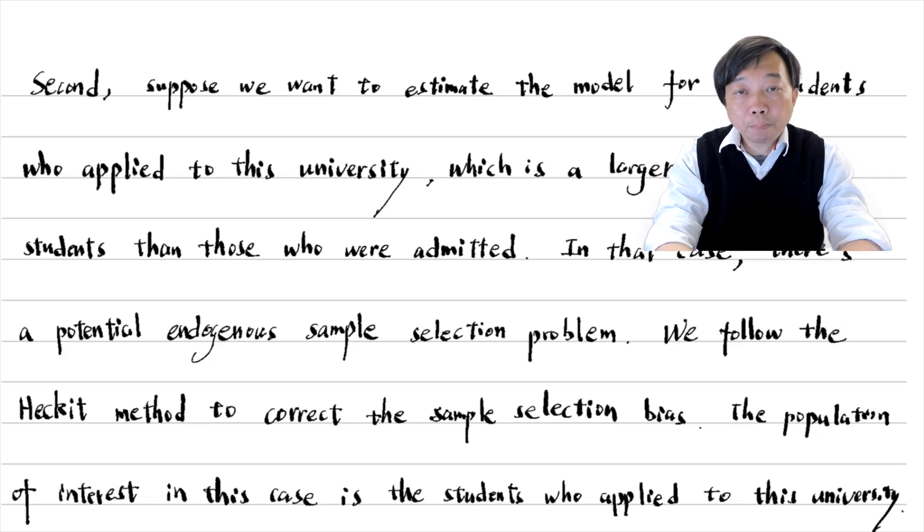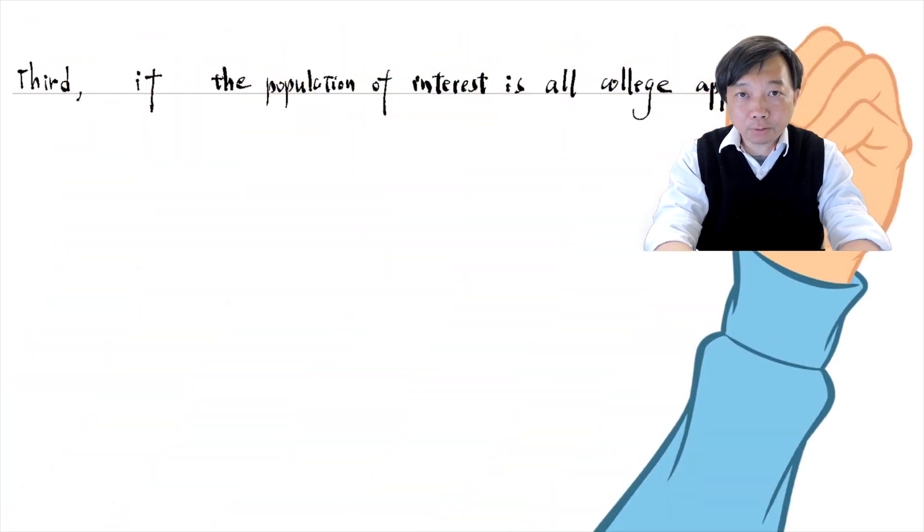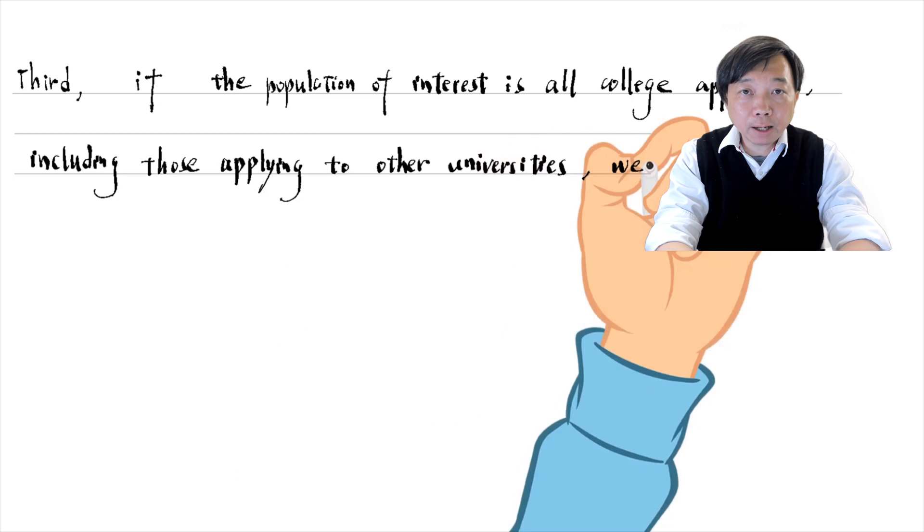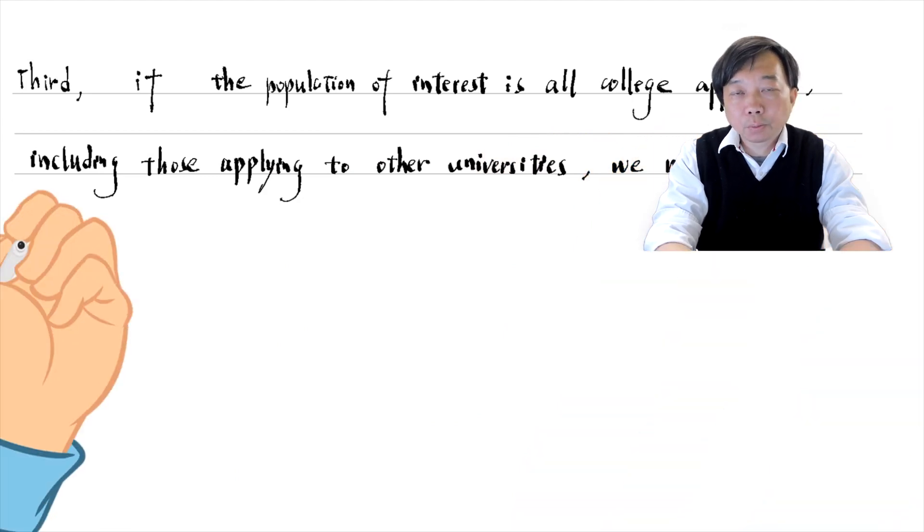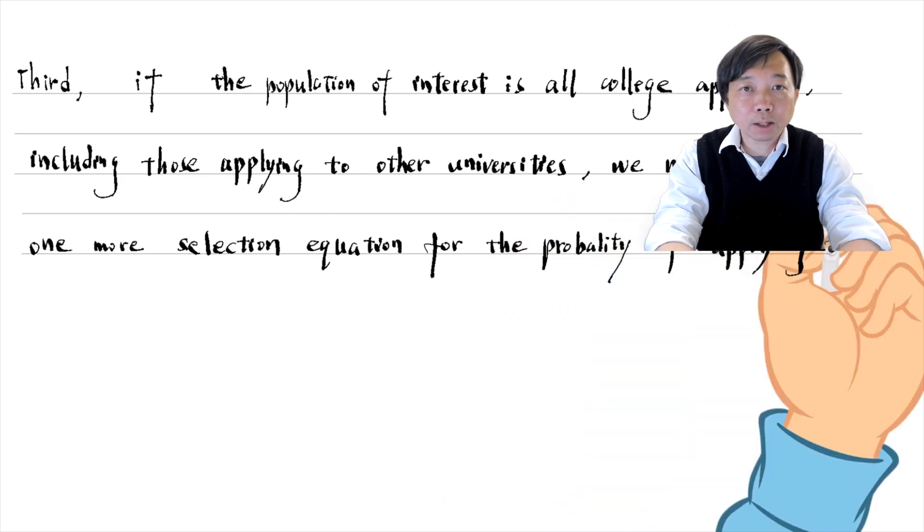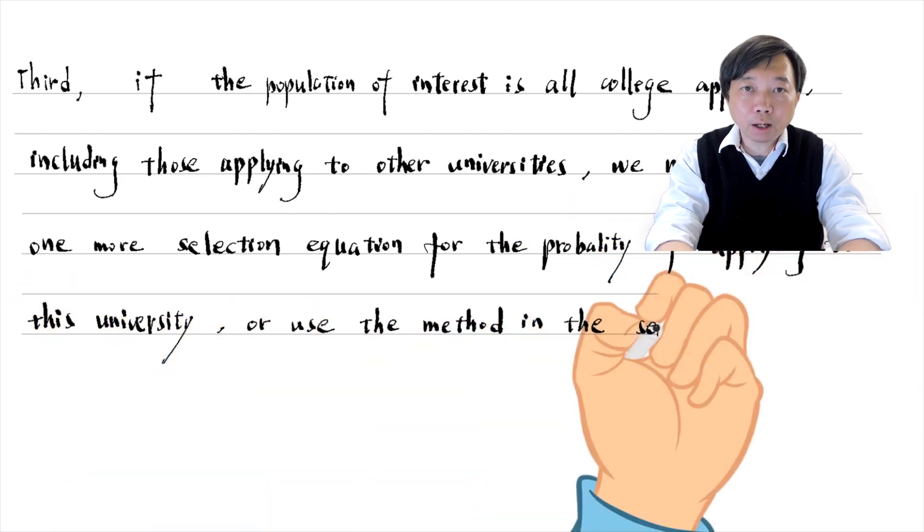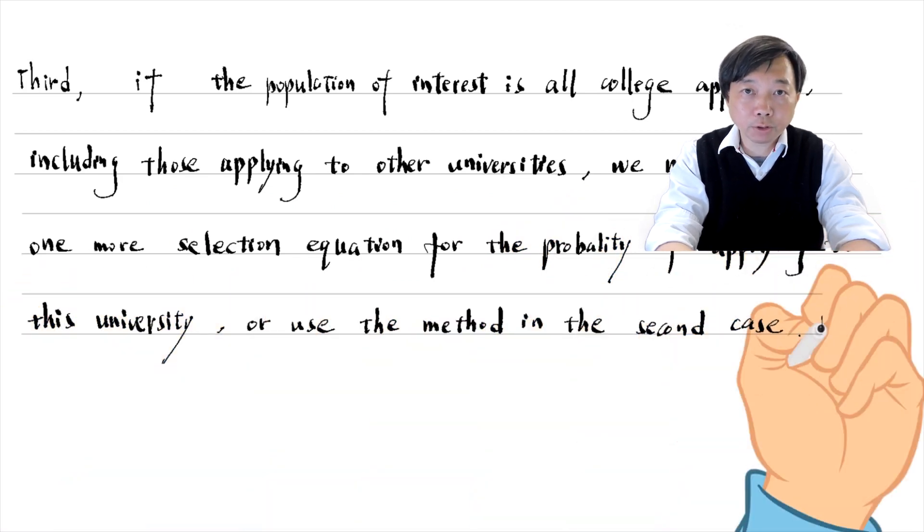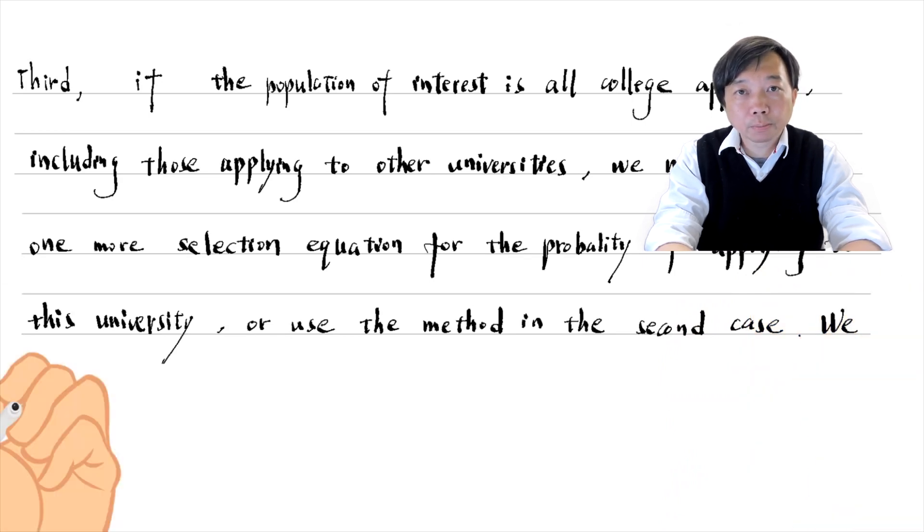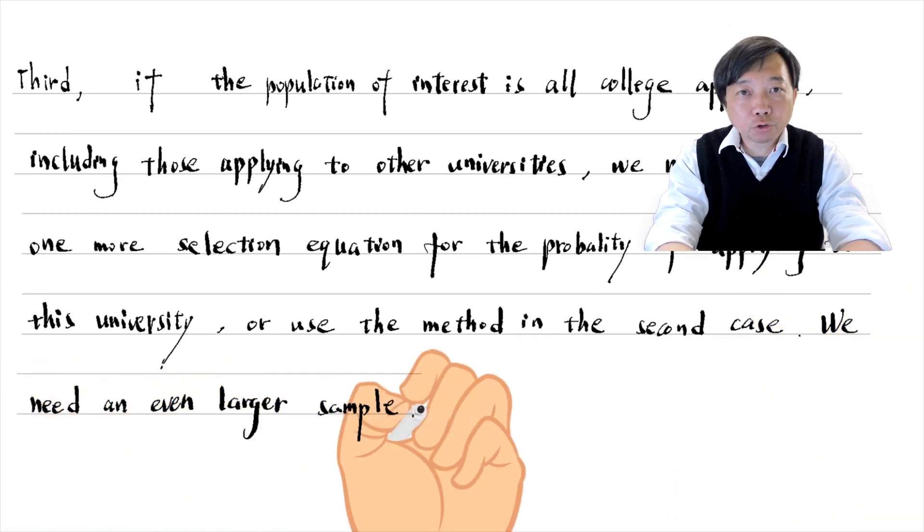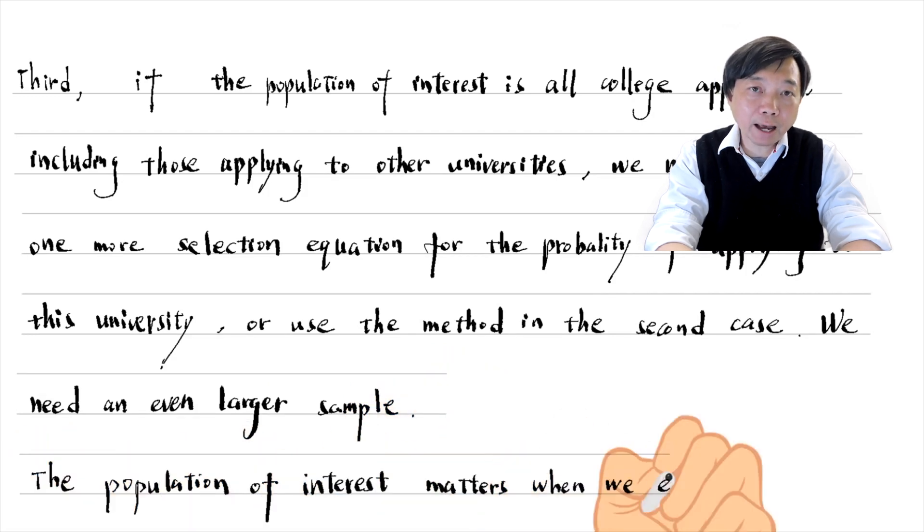Suppose the population of interest is all college applicants, including those applying to other universities. In that case, we may consider one more selection equation for whether to apply to this university, or use the method in the second case. The population of interest matters when we estimate a model.